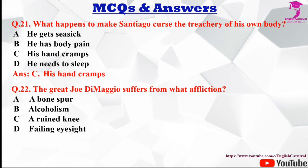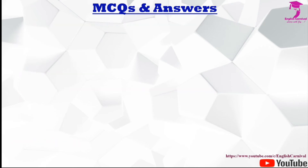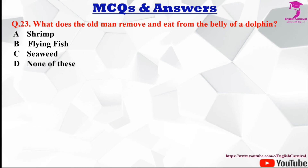Question number twenty-two: The great Joe DiMaggio suffers from what affliction? Options are A bone spur, B alcoholism, C a ruined knee, and D failing eyesight. The correct answer is A, a bone spur.